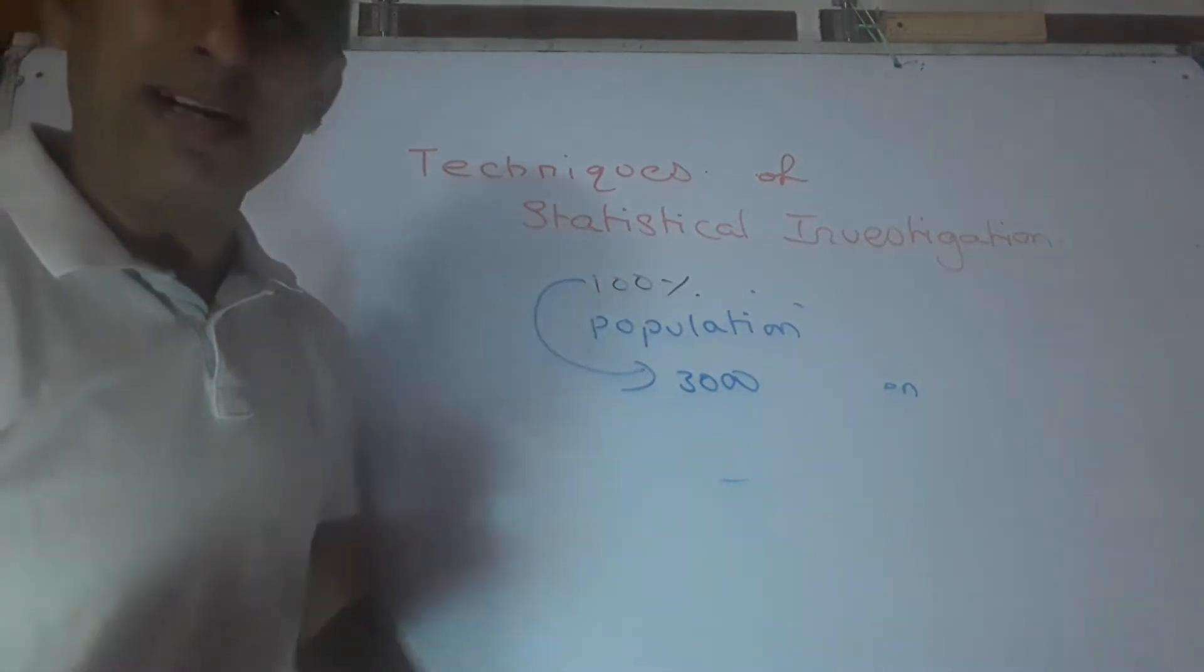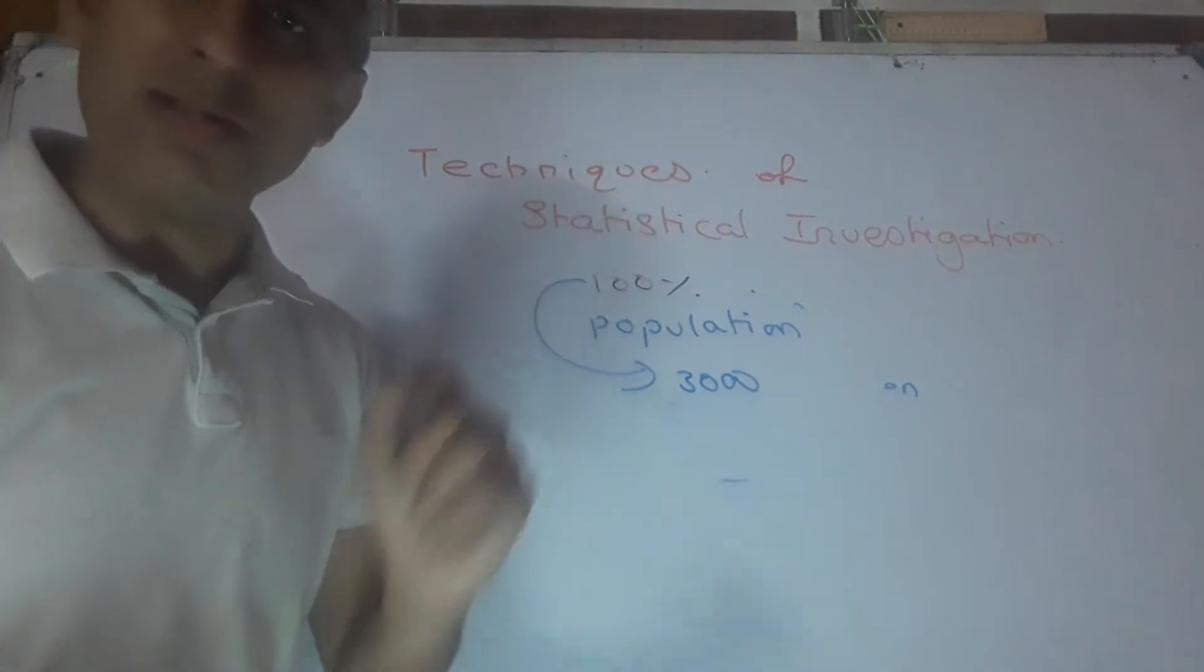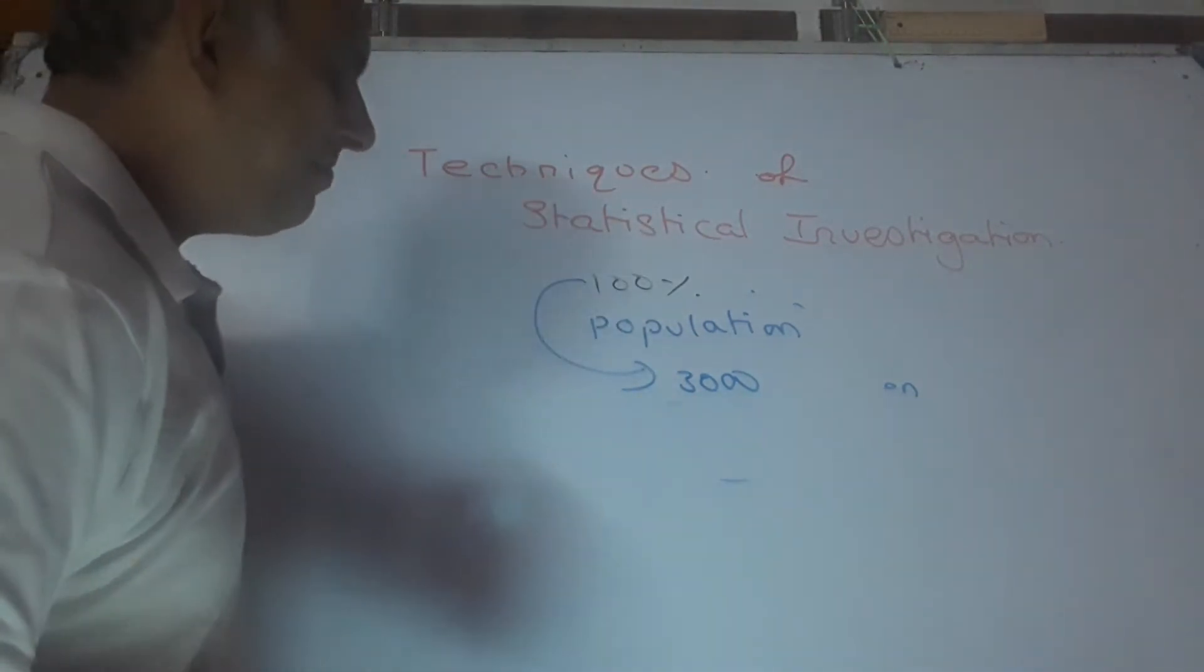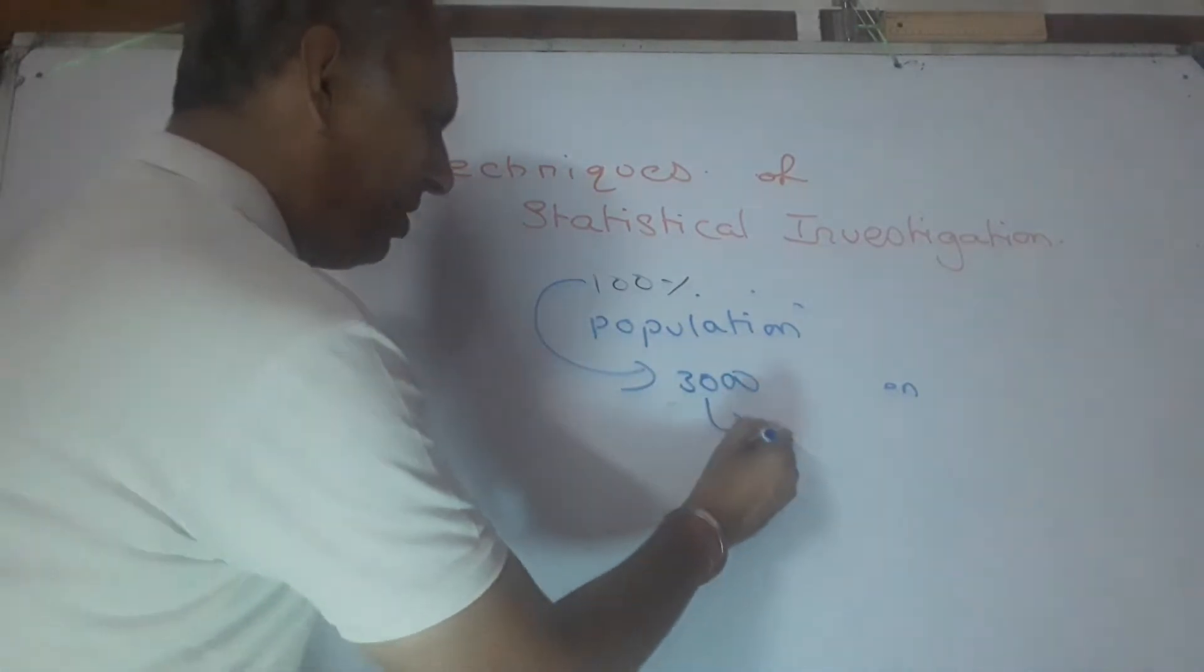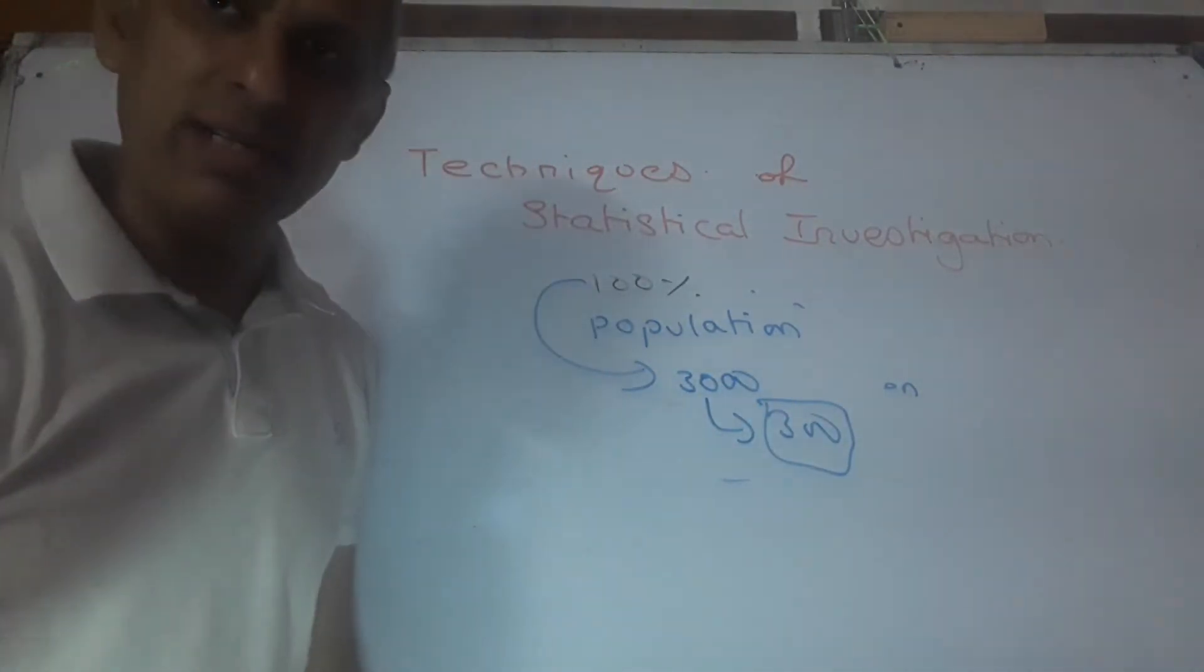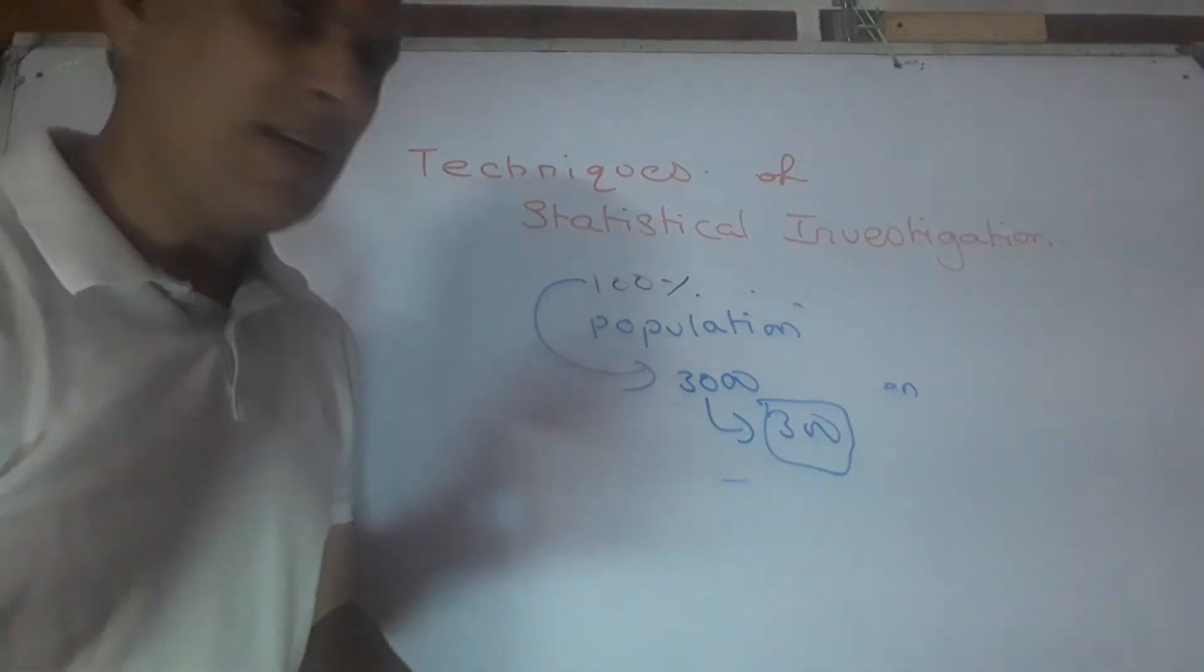But in census what we do, we take each and every element of the population. But then again, it's time consuming, it's costly. So what is the alternative method? Alternative method is to pick a sample of 300, do a study on it, and whatever the result comes, apply on full 3000.